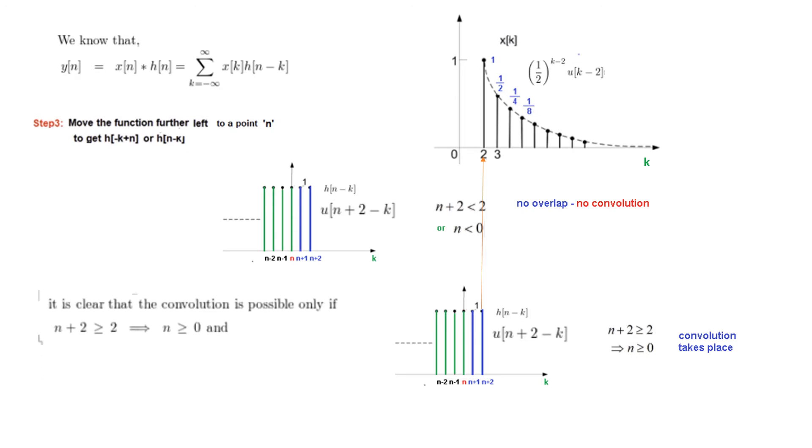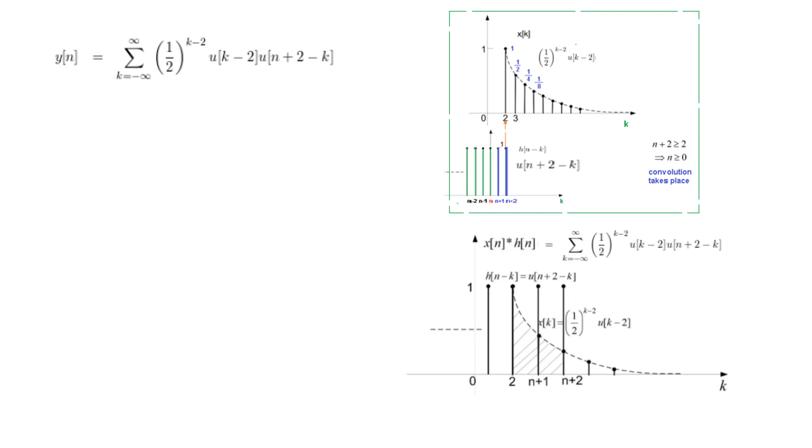And so we can say that n+2 is greater than 0, which implies that n is greater than 0. It is the same thing that we explained here. And therefore our convolution sum will now be half to the power (k-2), u[k-2] multiplied by h[n+2-k]. This is the convolution sum. And it is valid for n greater than 0.